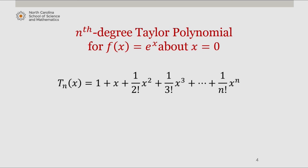and we can write the general term as 1 over n factorial x to the n. We can write that in summation form as the sum from k equals 0 to n of x to the k over k factorial.